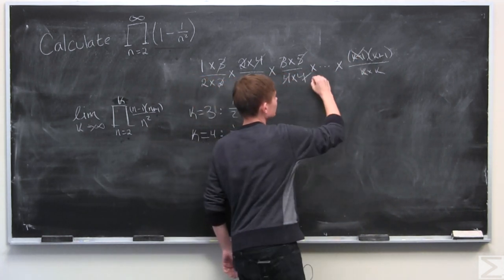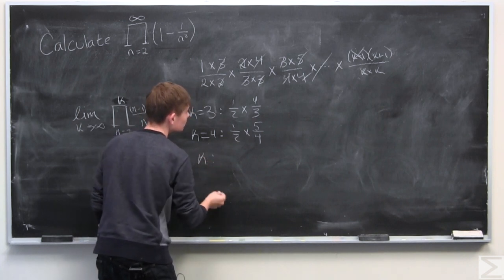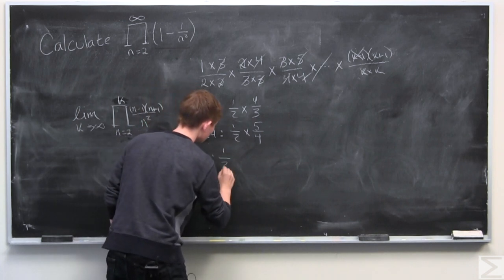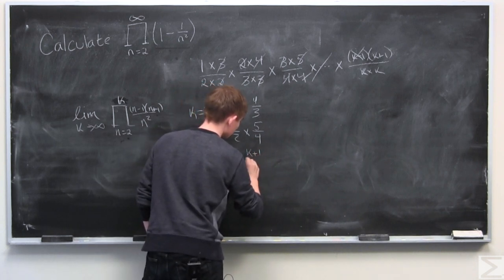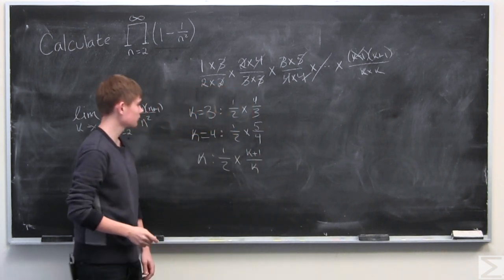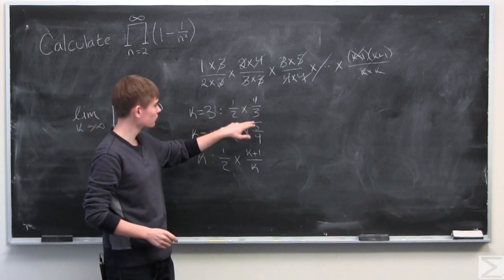All of this would cancel out. And so with k we would have 1 half times k plus 1 over k which makes sense. When k is 4 we get 5 over 4. When k is 3 we get 4 over 3.